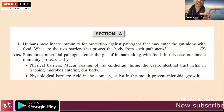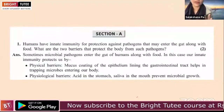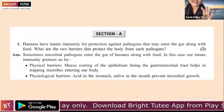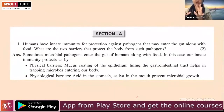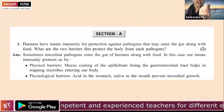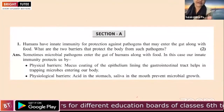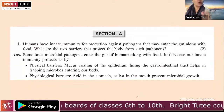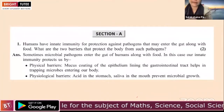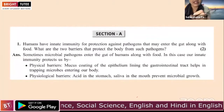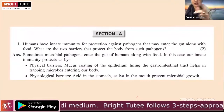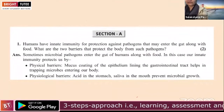Question 1 is from Human Health and Disease: 'Humans have innate immunity for protection against pathogens that enter the gut along with food. What are the two barriers that protect the body from such pathogens?' CBSE is not giving direct questions this time — they give situation-based or twisting questions. For this question, the answer involves the physical barrier and the physiological barrier.